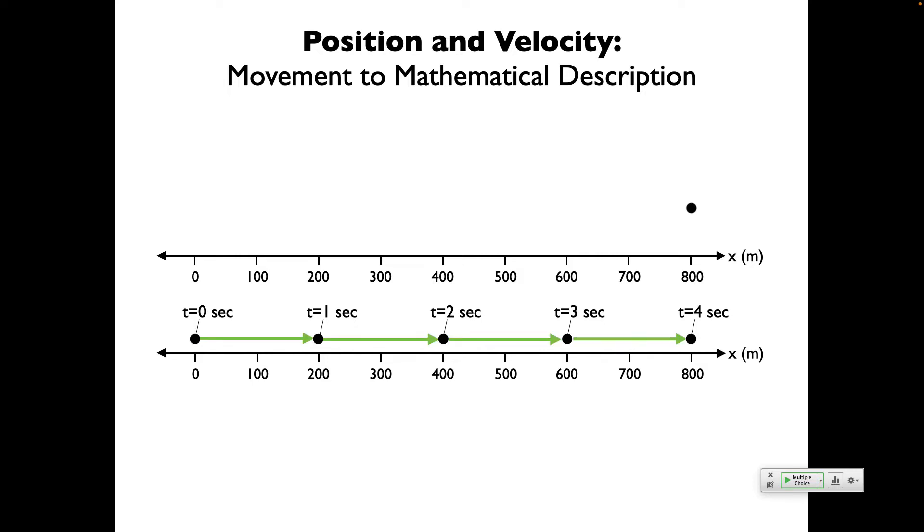If we want to draw the velocity vectors, the displacement vectors don't tell us as much as the velocity vectors. Here are our velocity vectors. This is what we call uniform motion, which means constant velocity. What do you notice about all these arrows? Yeah, they're all the same length, which means they're a constant velocity. We are not changing speeds.